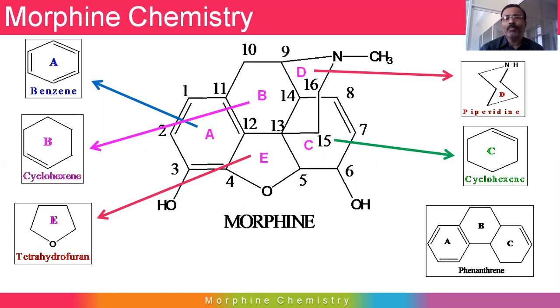Ring E is also a heterocycle which contains oxygen as a heteroatom. It is a five-membered ring called furan. However, since the double bond is missing here, it is called tetrahydrofuran.